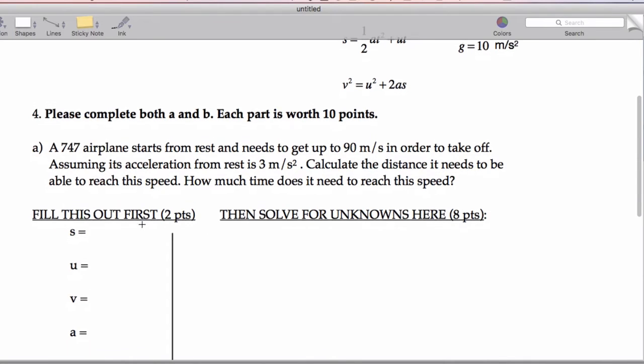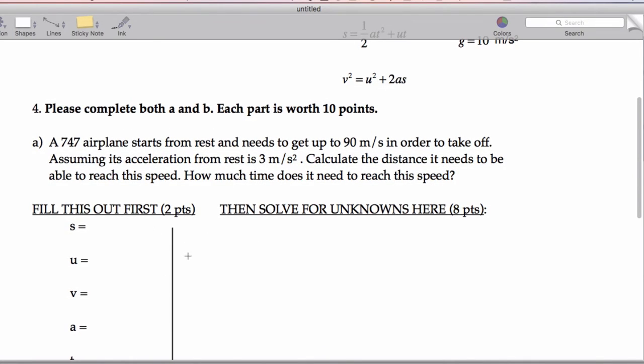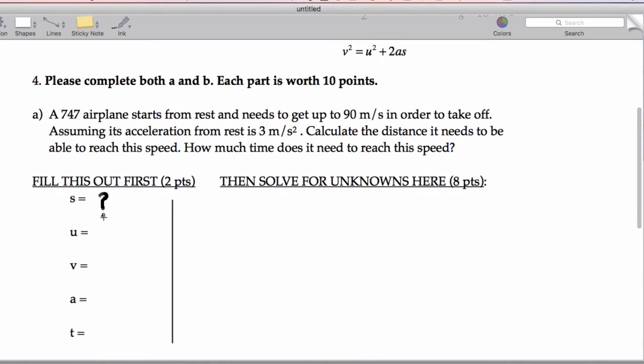We have a value for its acceleration, we need to know the distance it needs to calculate, we need the distance it needs to reach the speed and we want to know how much time it takes. We don't know how far it needs to go. Starts from rest means u equals 0, v is 90 meters per second, our acceleration is 3 meters per second squared. Please pay attention to units so you know where things go, and then our time is unknown.